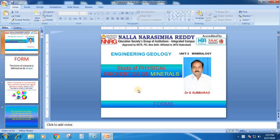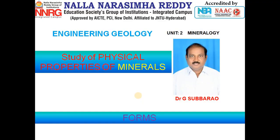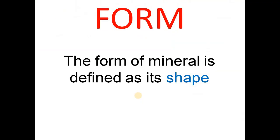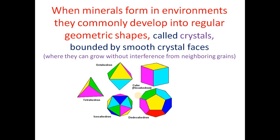In this class, only forms are explained. The form of a mineral is defined as its shape. When minerals form in environments, they commonly develop into regular geometric shapes called crystals, which are bounded by smooth faces.